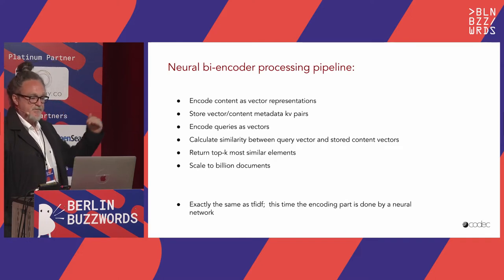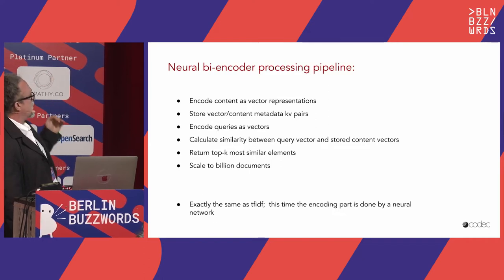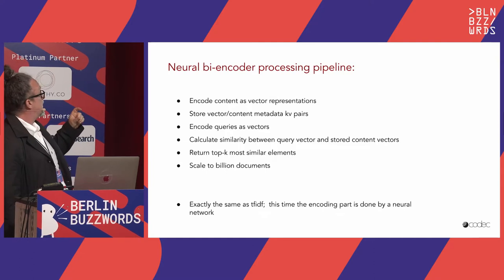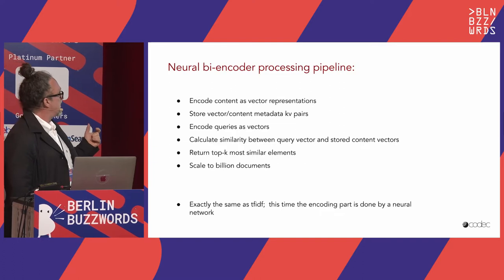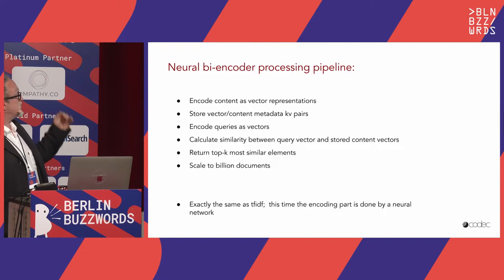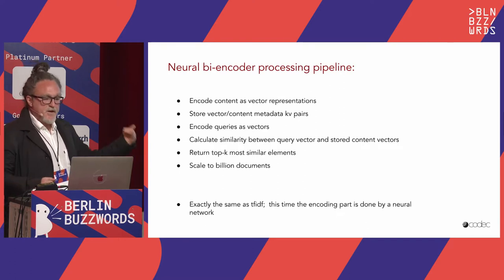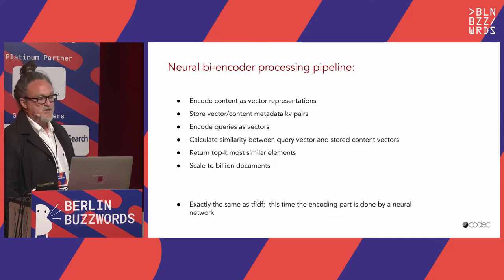This is the pipeline for the neural bi-encoder processing steps. You get the content, pass it through a neural network, get the vector output, and store the vector-content key-value pairs. At query time, you repeat the same process: encode your query as a vector, then calculate similarity between your query vector and the entire storage, and return the top-k most similar elements. You need to scale this to billions of documents.